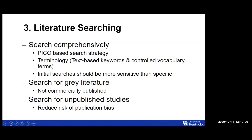The third step is the literature search. A systematic literature search of multiple databases via a search strategy that includes controlled vocabulary terms and concepts is an integral part of the systematic review, as it minimizes biases inherent to narrative reviews. Initial search strategies should be sensitive — able to capture all relevant evidence — rather than highly specific. You need to search based on your PICO framework using controlled vocabulary and text words, and you need to search the grey literature.